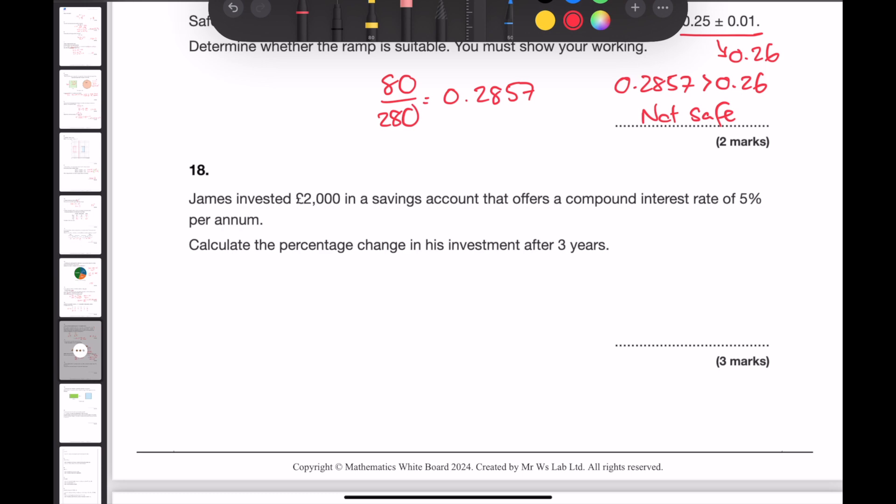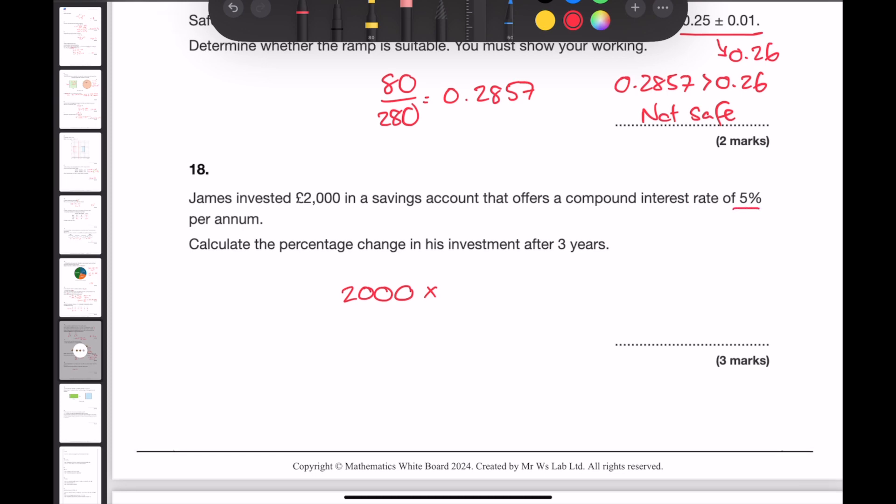Question 18. James invested £2,000 in a savings account that offers a compound interest of 5% per annum. Calculate the percentage change in his investment after 3 years. To calculate how much James would have after 3 years, start with the original amount and times it by the decimal multiplier. Because James is getting 5% every year, this is getting added on to what he starts with. So 100% plus 5 would give me 105%. And dividing 105 by 100 to turn it into a decimal is 1.05. To be able to calculate it after 3 years, we raise this to the power of 3. So 2000 times 1.05 to the power of 3 gives me 2315.25.